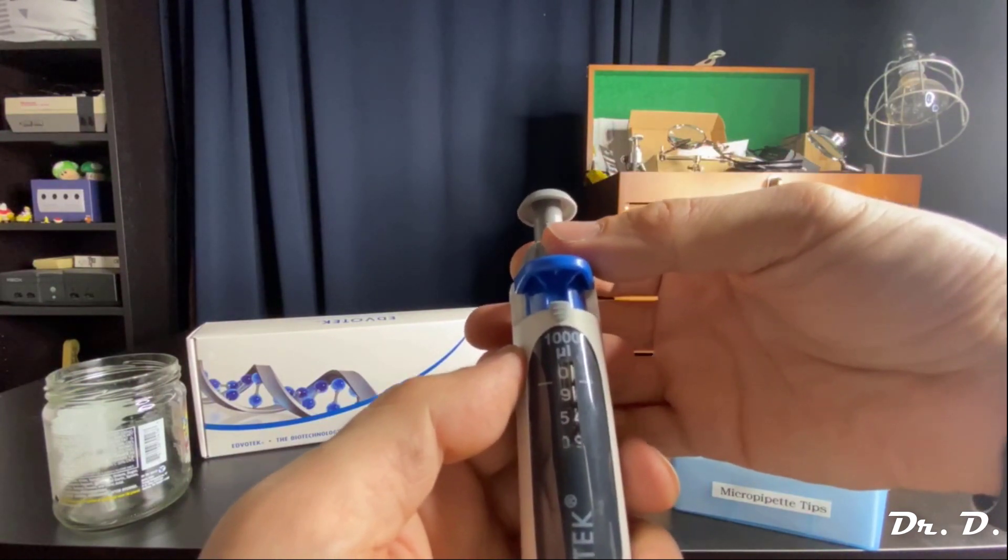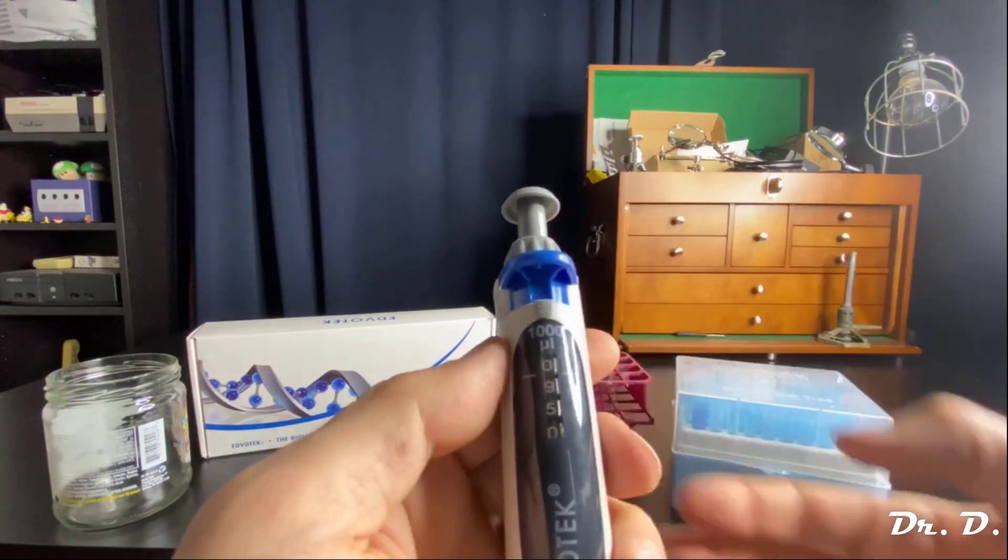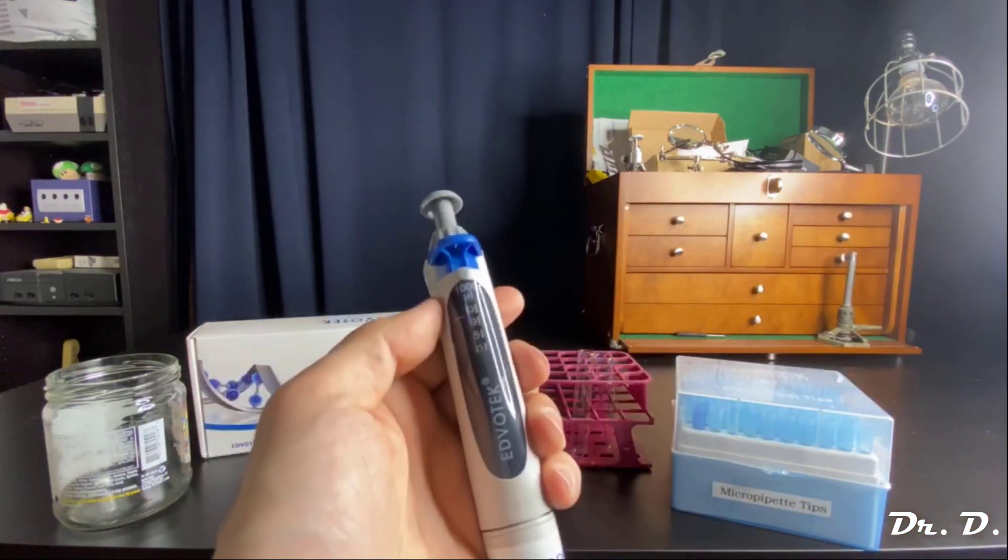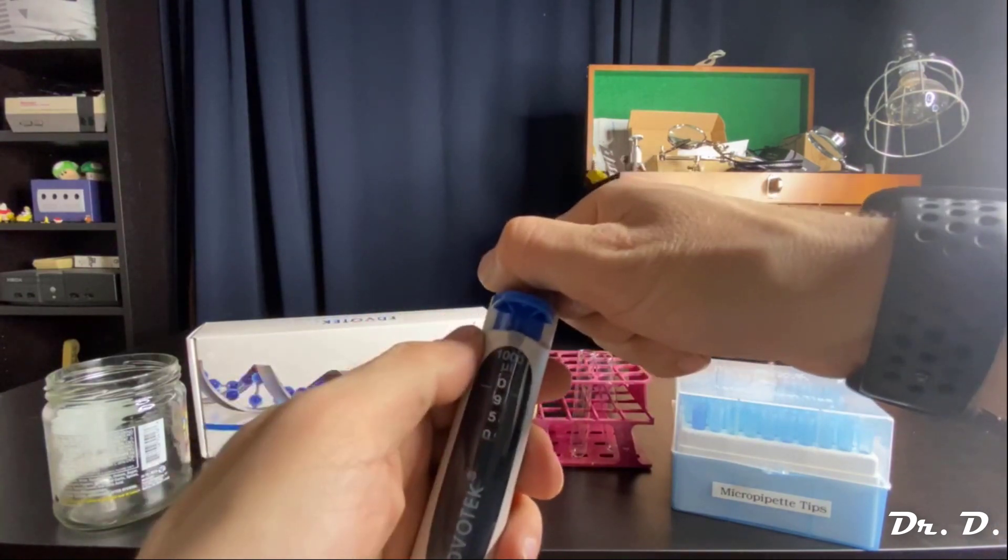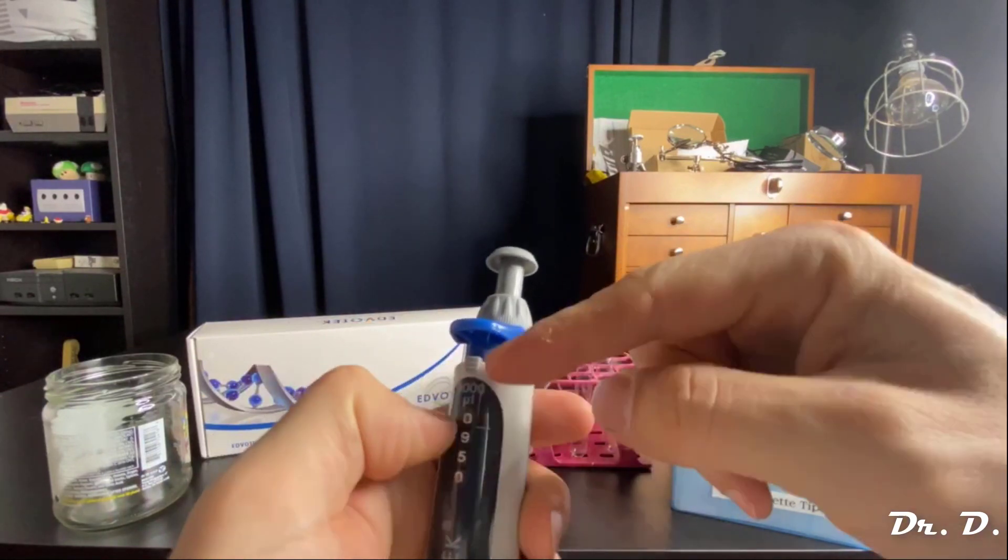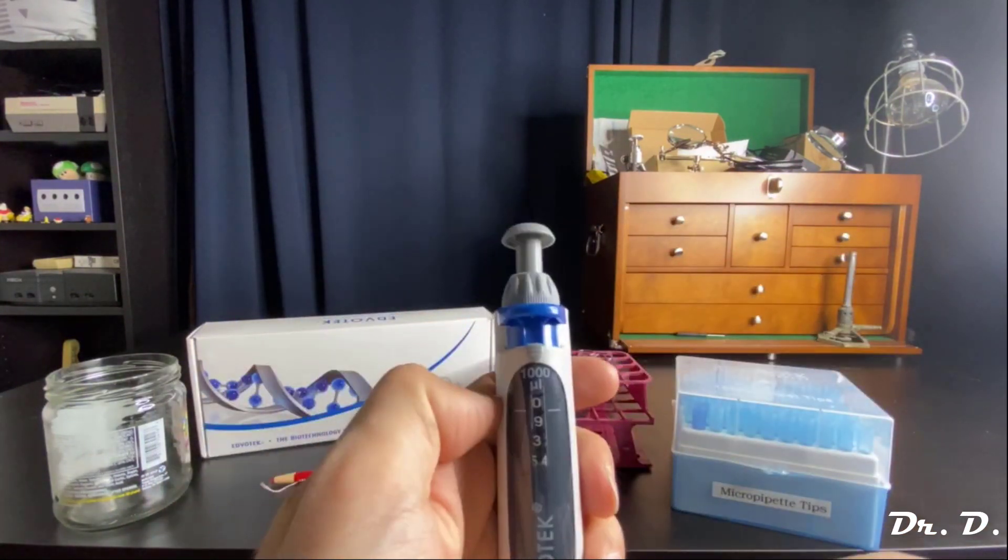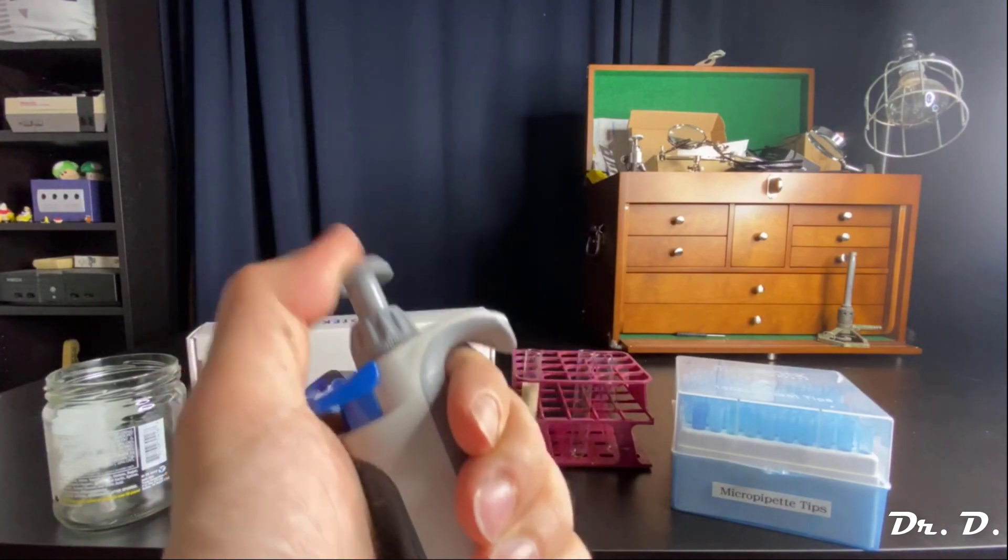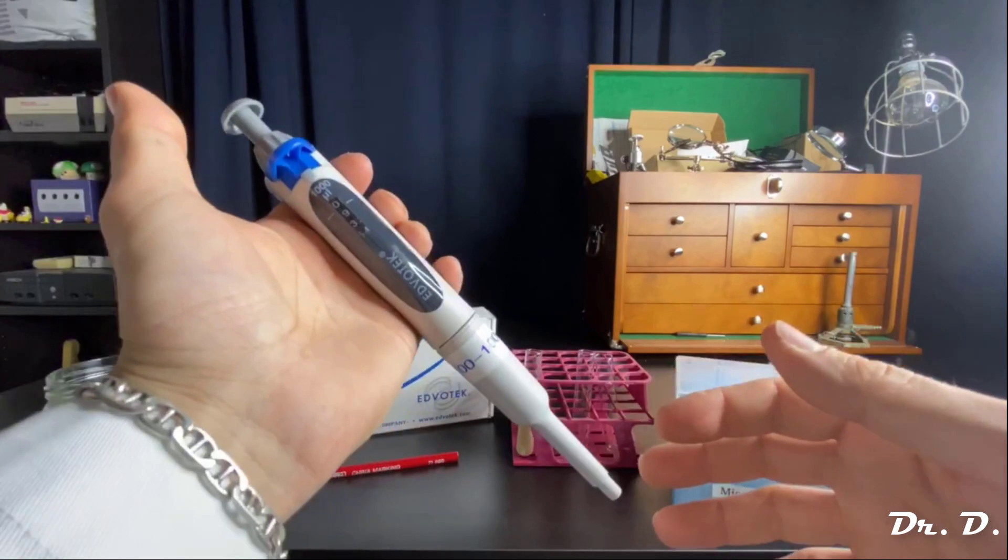Let's say I want 950 microliters. I would set it to 950 microliters and then engage the lock again. So just keep that in mind. If you're trying to turn it and it's not budging, don't force it. You will break it. Undo the lock to change the volume, then push down on the lock to lock it so that you don't lose your setting when you're doing the actual pipetting. So that's how it works.